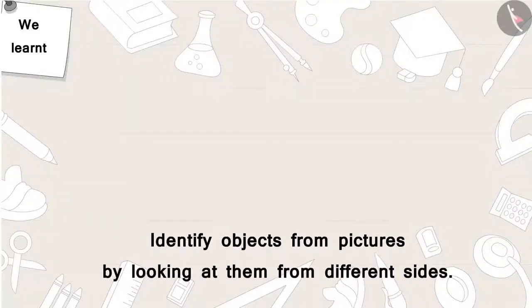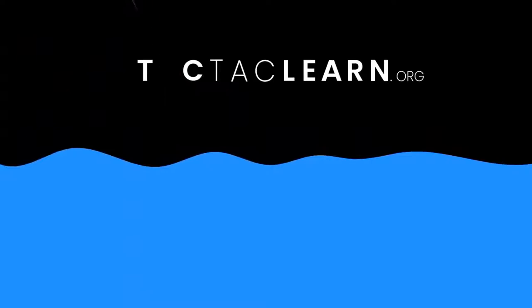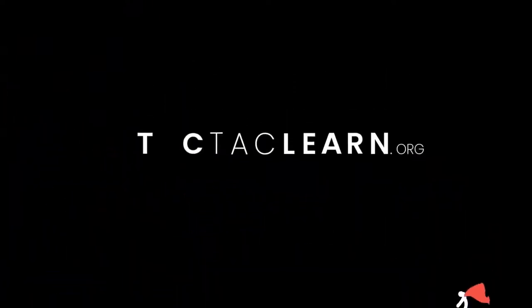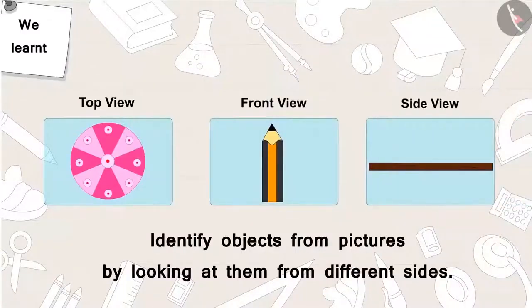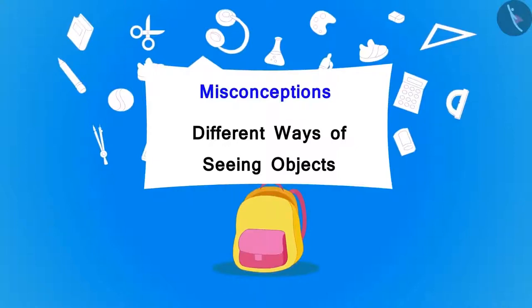In this video, with the help of some interesting examples, we learned to identify objects from pictures by looking at them from different sides. In the next video, we will see some misconceptions about looking at objects from different sides. In the previous video, we learnt to identify objects with pictures looking at them from different sides. In this video, we will learn some misconceptions about seeing objects from different sides.